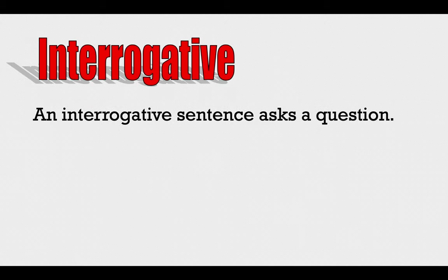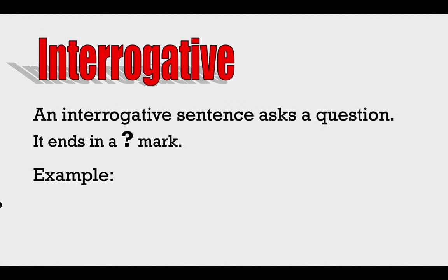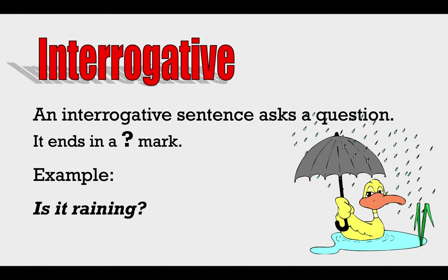Interrogative. An interrogative sentence asks a question. It ends in a question mark. Example: 'Is it raining?' It is raining, all right.